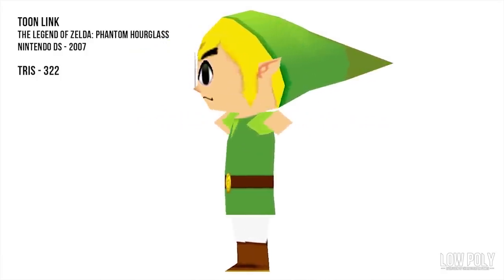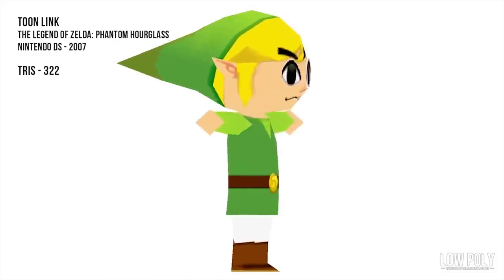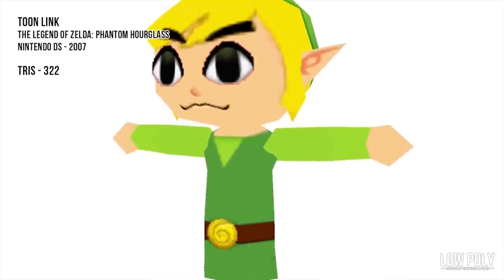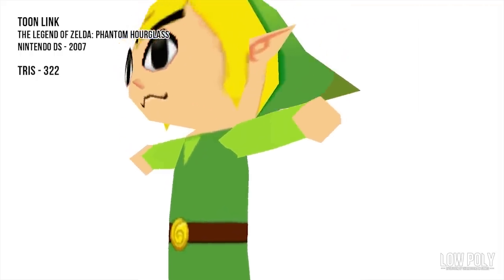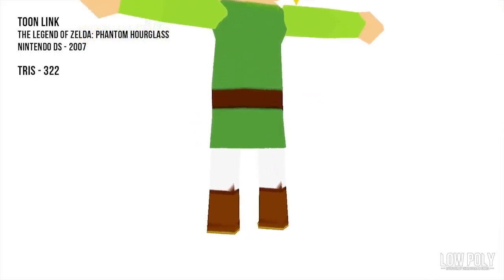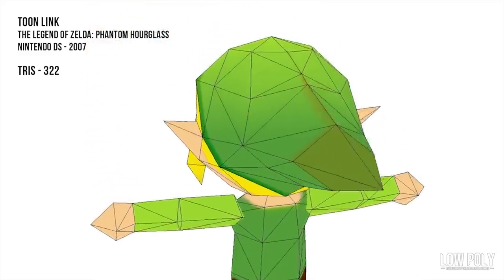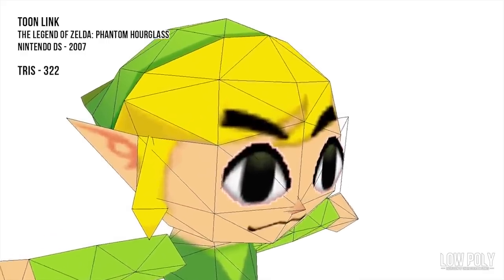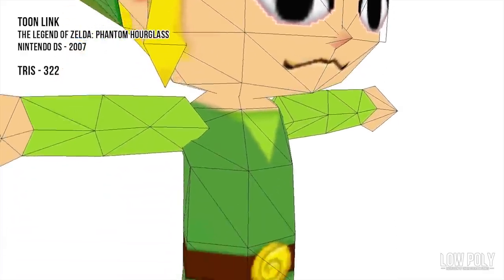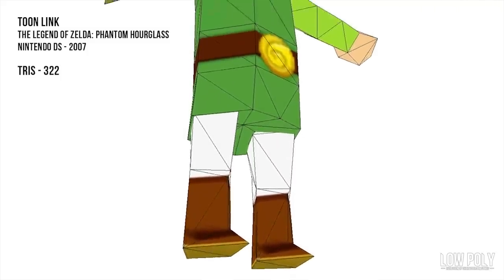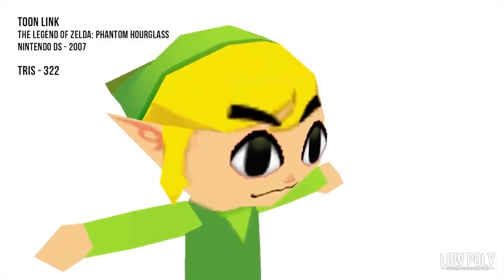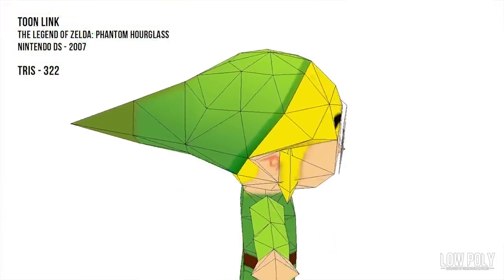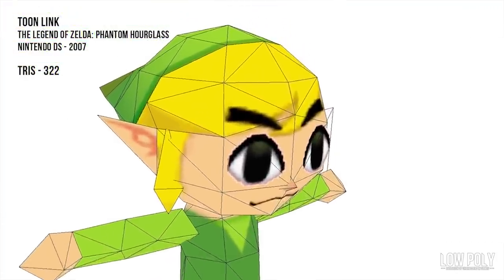This model is Toon Link from The Legend of Zelda: Phantom Hourglass, and this is probably the most low-poly we've seen Link so far. At 322 tris, this is about half the size of the original Young Link in Ocarina of Time on the N64 — so we're talking really low-poly, which makes sense given it was on the Nintendo DS. Everything is boiled down into very simple shapes: hands are basically balls, the head is a round thing with pointy ears, and the hair is basically just a texture. You would never see this model up close while playing. Just like the Wind Waker model, the eyes are separate textures — it's really cool to see the same developer technique used on a much smaller scale.